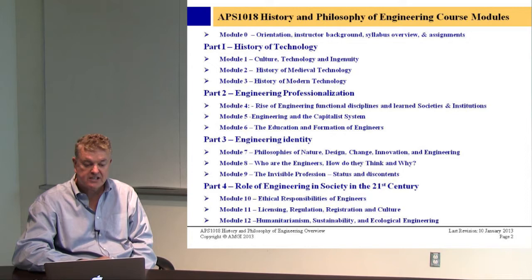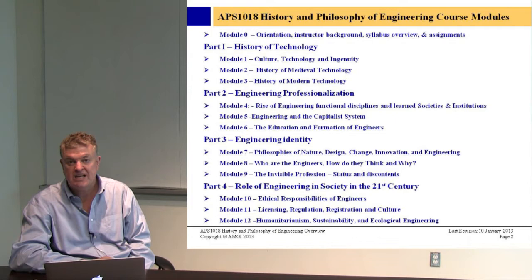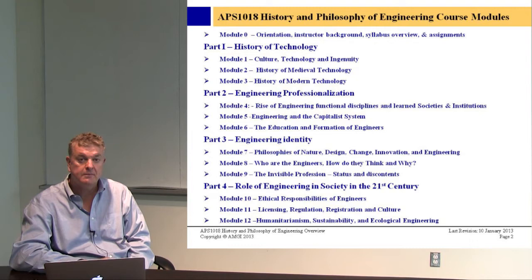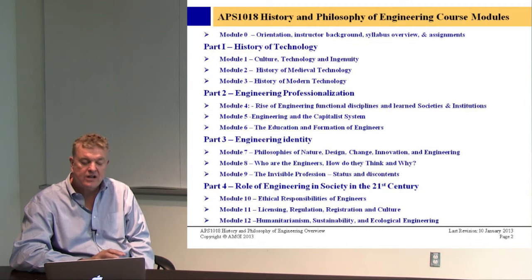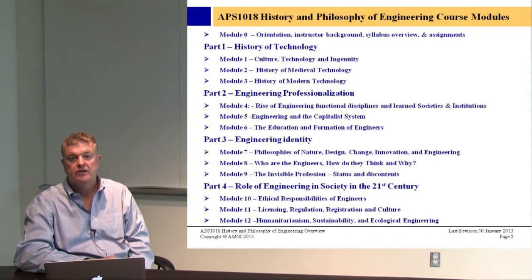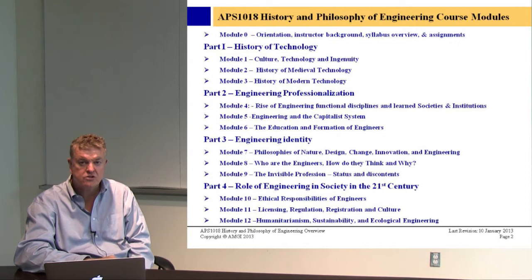Module six will cover the history of education and the formation of engineers in various countries — mainly English speaking, but also the Latin countries, Germany, France and Italy. Part three talks about engineering identity, including philosophies of nature, philosophy of design, change and innovation. Greek philosophy focused on truths that could not be refuted — for example, the area of a circle had a certain equation. That was called philosophy: a truth that could not be proven wrong.